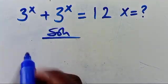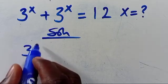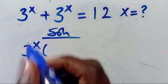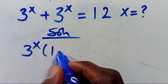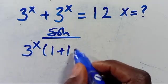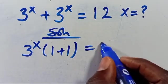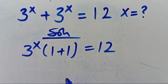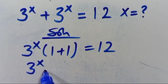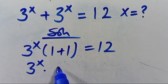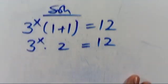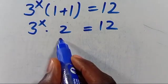We have 3 to the power of X in common, so we can factor it out: 3 to the power of X times open parentheses — this 3 to the power of X divided by this gives us 1, plus this 3 to the power of X divided by this gives us 1 — equals 12. So we have 3 to the power of X multiplied by 1 plus 1, which gives us 2, equals 12.